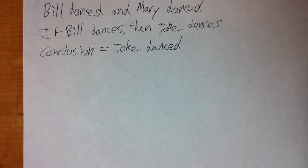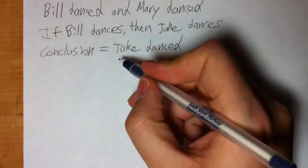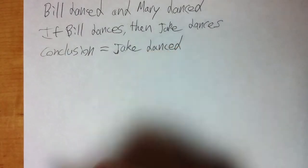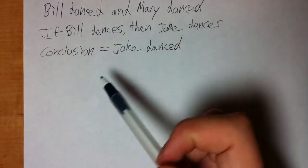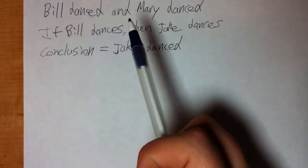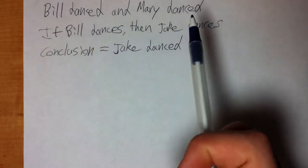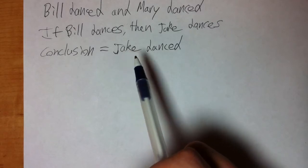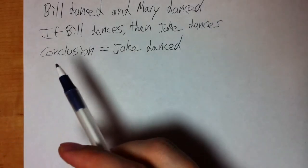All the proof really is is just a series of logical assumptions that we make based on information every single day. Can I prove this conclusion based on what I know, which are the two premises? Bill danced and Mary danced. If Bill dances then Jake dances. So is it reasonable to conclude that Jake danced?